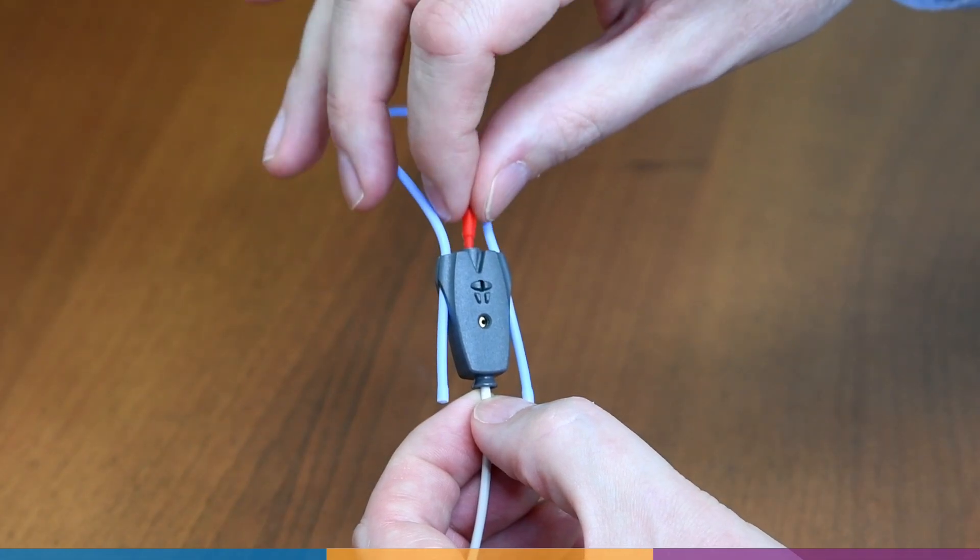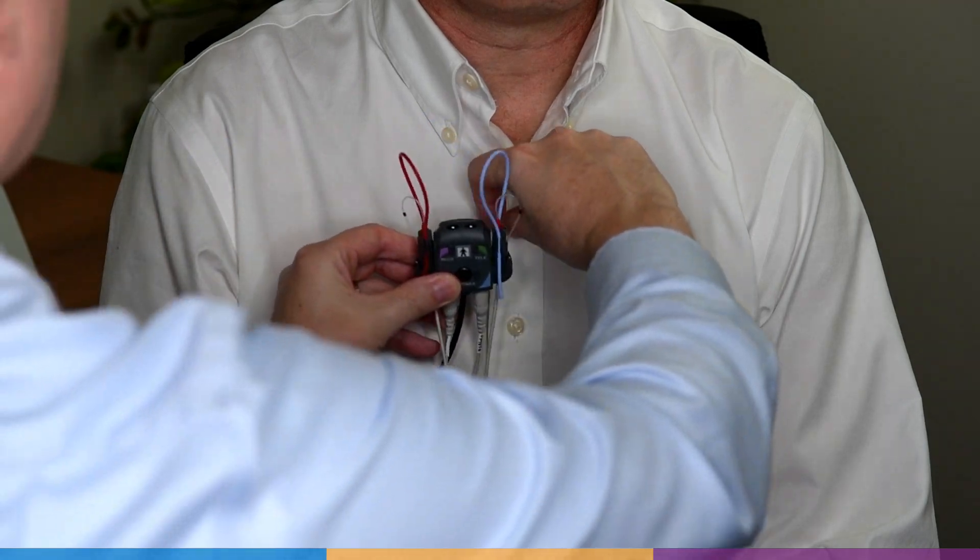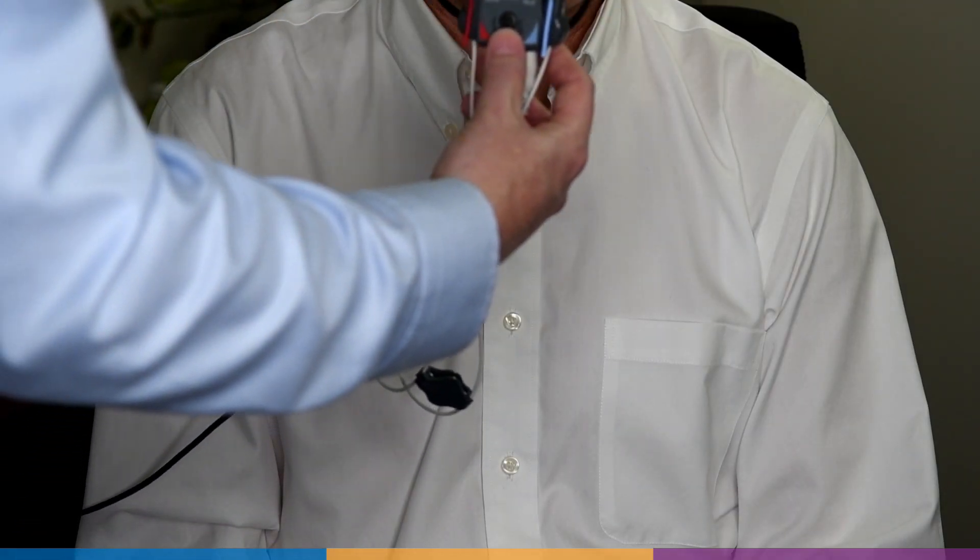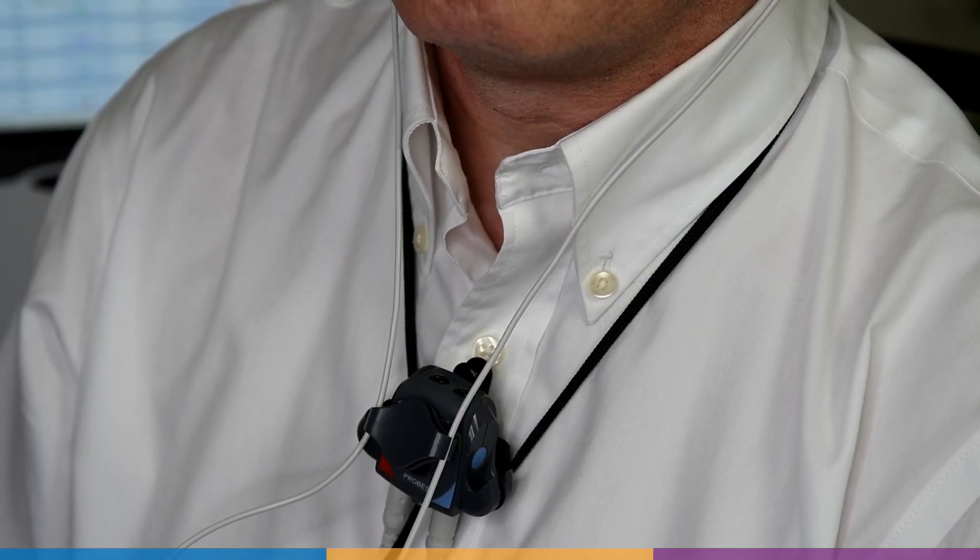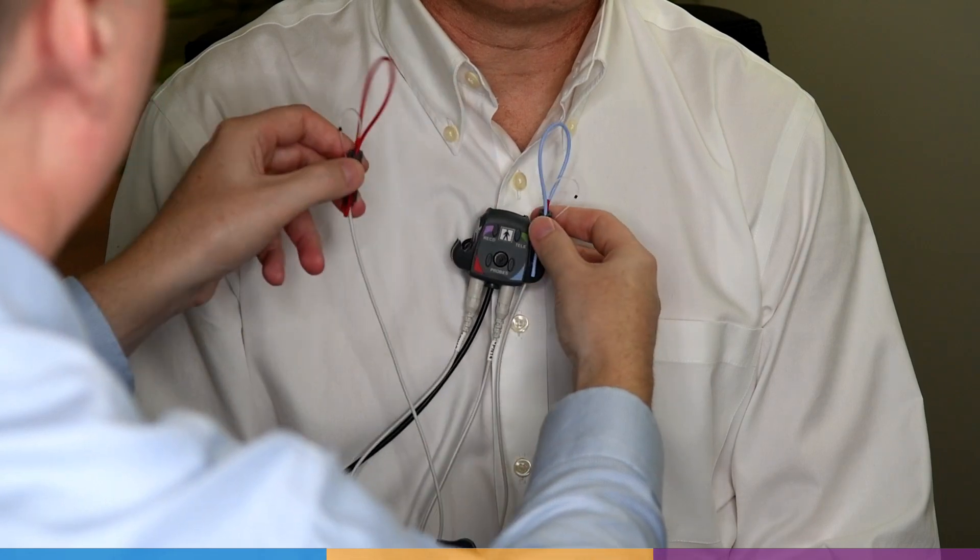Attach the probe tube to the probe module. For Verifit2, clip the probe dock to the client's clothing near the middle or to one side. If it's more convenient, it can be alternatively clipped to a lanyard or the chair back.